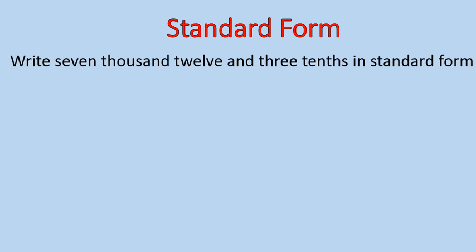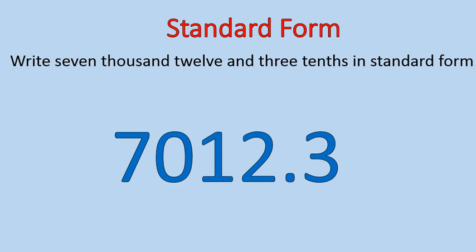Here's an example type of question you might be asked: write 7,012 and 3 tenths in standard form. 7,012 means that we have the 7 in the thousands column, we have 12 here in the tens and ones column, and 3 tenths is right there — that's the place value for 3 tenths. That is standard form: 7,012 and 3 tenths. It's important to remember that this position is called tenths. If we went two decimal places, it would be hundredths. You need to know the thousands, hundreds, tens, units, and tenths column for writing numbers in standard form.